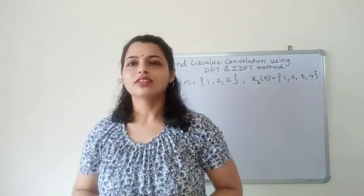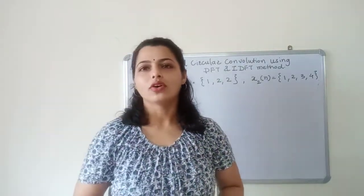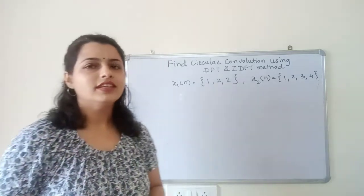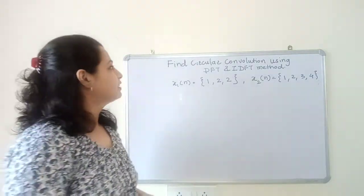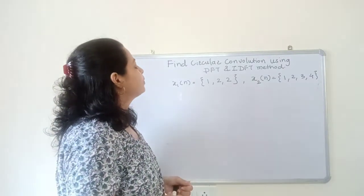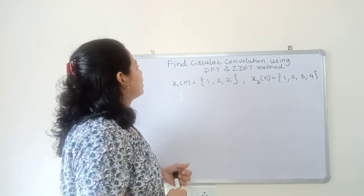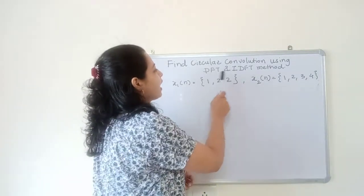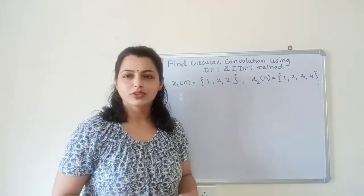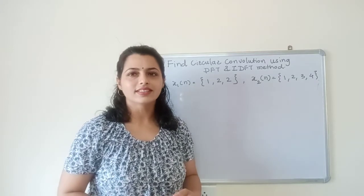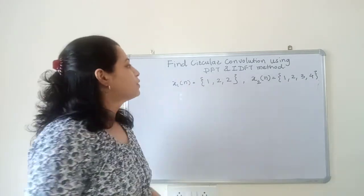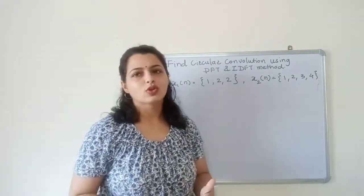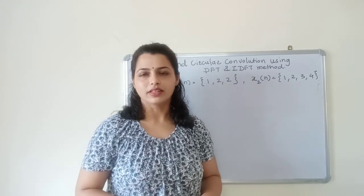Today we will solve a numerical on circular convolution. This is the same numerical we have solved before. Find circular convolution using DFT and IDFT method. This method is different — it is also called the frequency domain method.